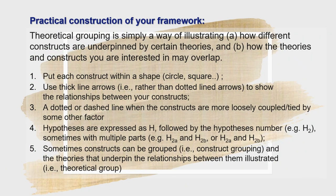Practical construction of your framework. Theoretical grouping is a simple way of illustrating A, how different constructs are underpinned by certain theories, and B, how the theories and constructs you are interested in may overlap. Some tips to remember: One, put each construct within a shape such as a circle or a square. Use thick line arrows rather than dotted line arrows to show the relationship between your constructs. Third, a dotted or dashed line when the constructs are more loosely coupled or tied by some other factor. Fourth, the hypotheses are expressed as H followed by the hypothesis number, assuming you have more than one hypothesis. And fifth, sometimes constructs can be grouped and the theories can underpin the relationship between those groups.